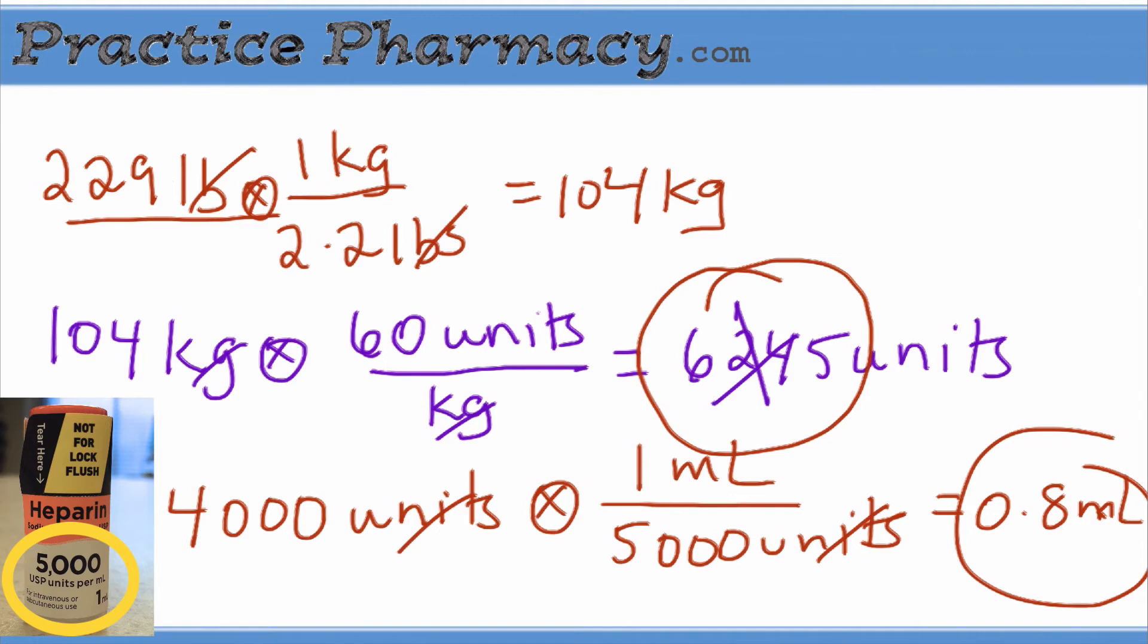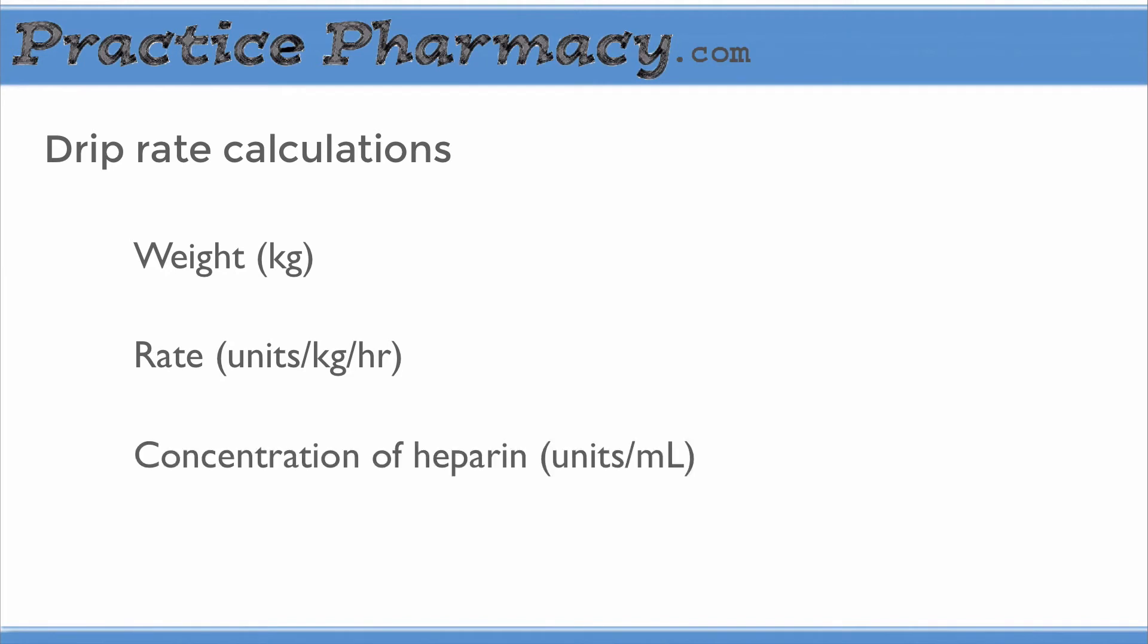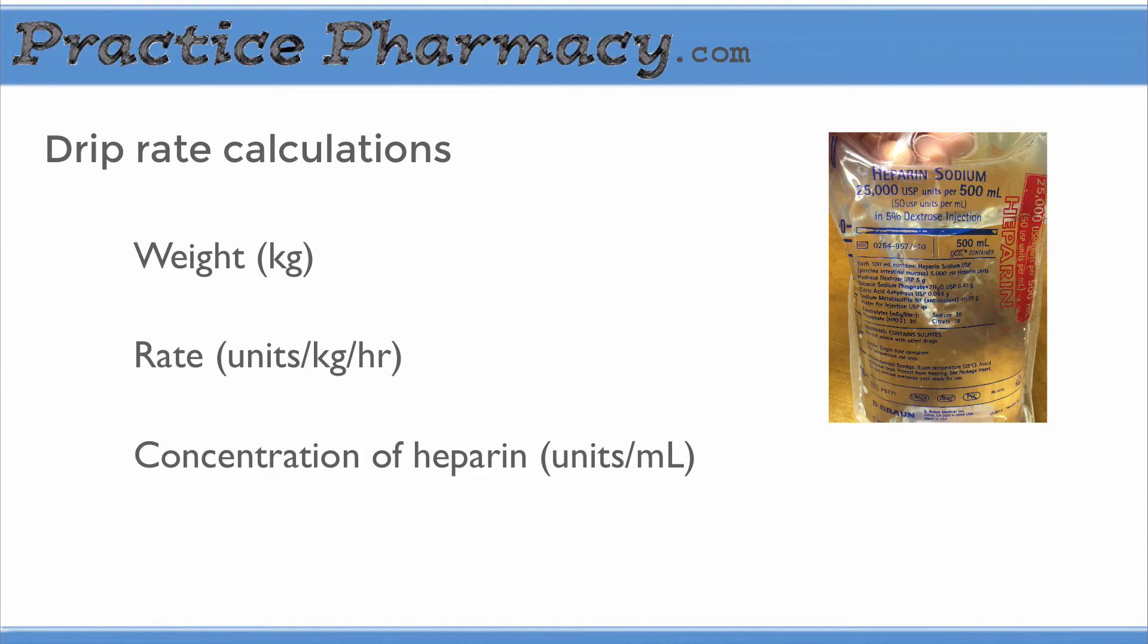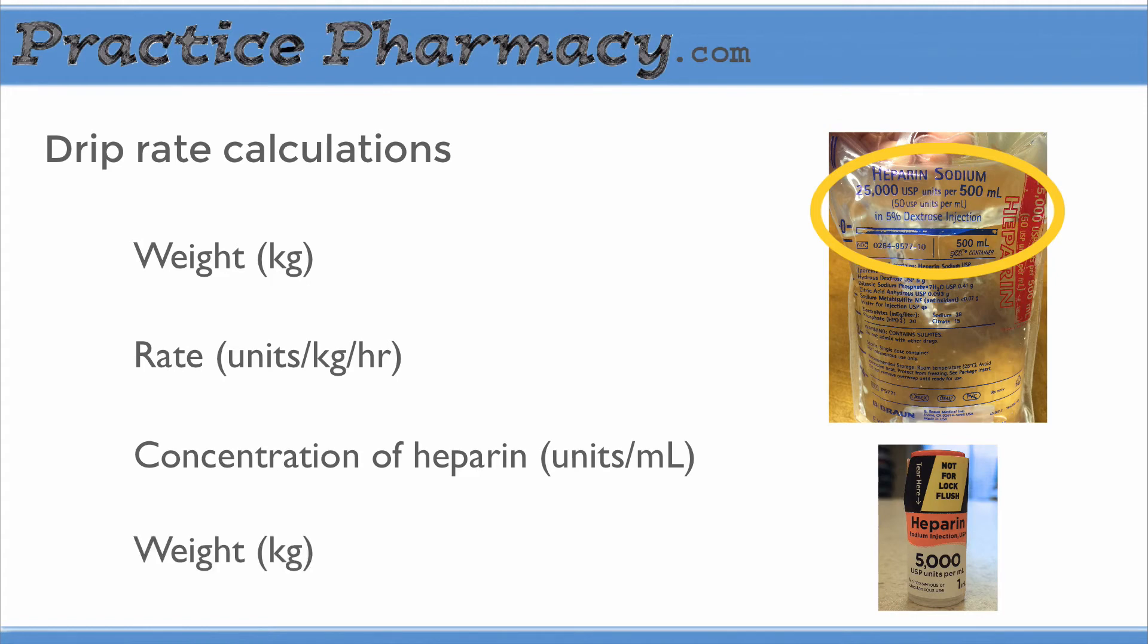Then the drip will be hung to maintain those levels. To calculate the drip rate, we need the patient's weight, the rate ordered on the protocol, which should be in units per kilogram per hour, and the concentration of the heparin, which will be in units per milliliter, but this time it's going to be different than the concentration of the bolus dose we just gave. The goal is to take the patient's weight and determine the rate in milliliters per hour.